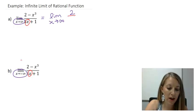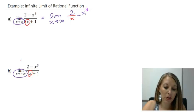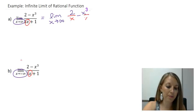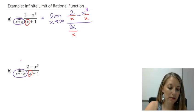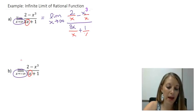So 2 divided by x minus x cubed over x, that is all over 3x divided by x plus 1 divided by x. Now I'm going to simplify each of these terms if I can.